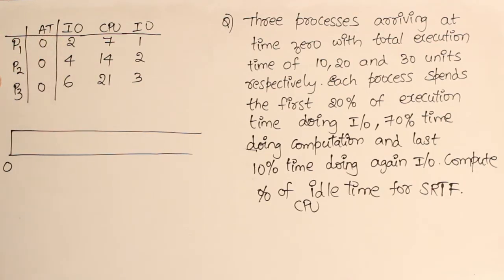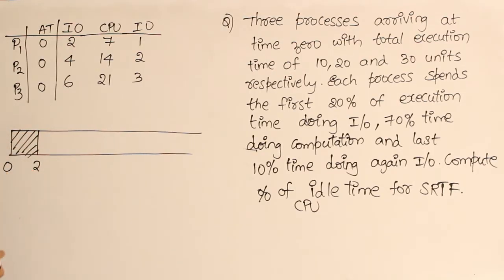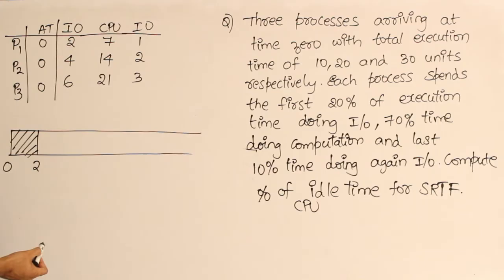So all of them are going to go to I/O for some time. Therefore, what happens is for 2 units no process is available, so CPU is idle from 0 to 2.